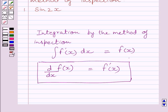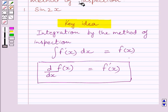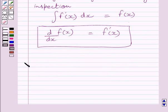Now we will use this as our key idea to solve the given question. Let us start with the solution. We have to find the anti-derivative of sin 2x. We will look for a function whose derivative is sin 2x.